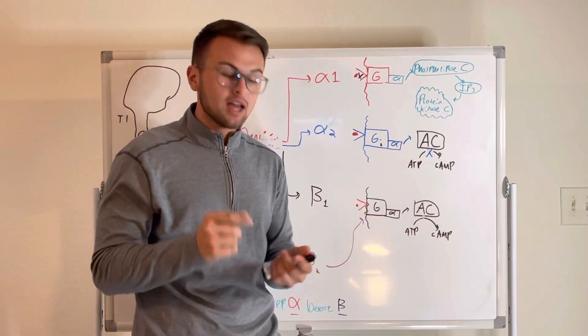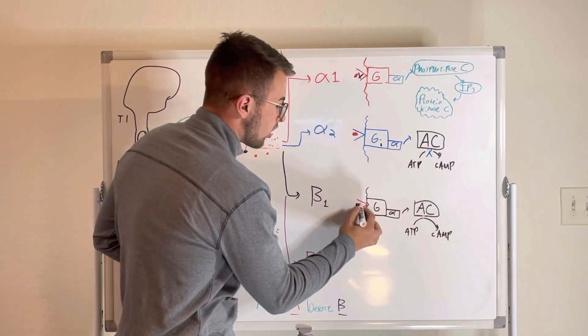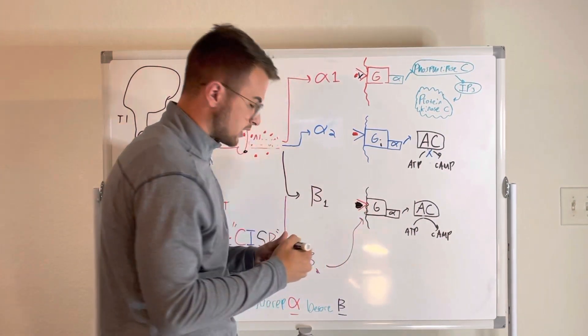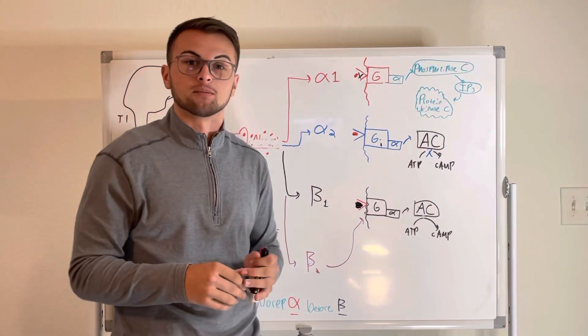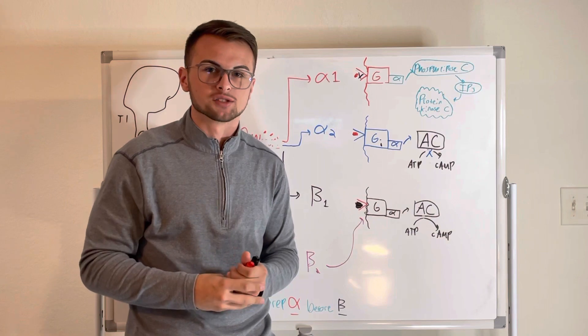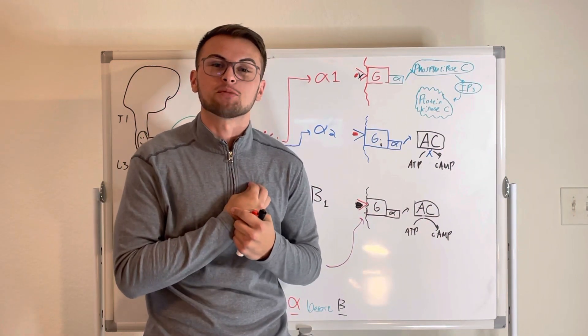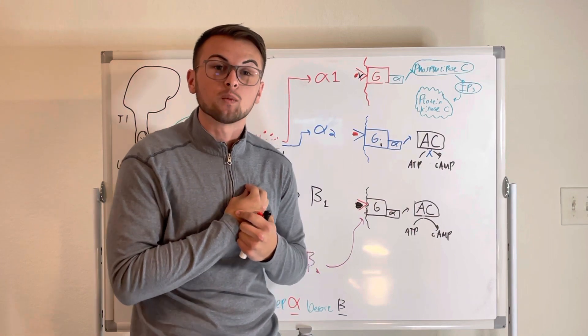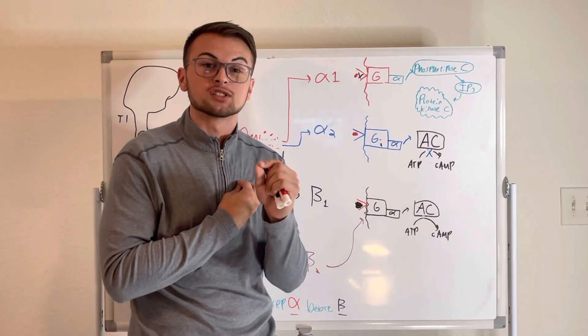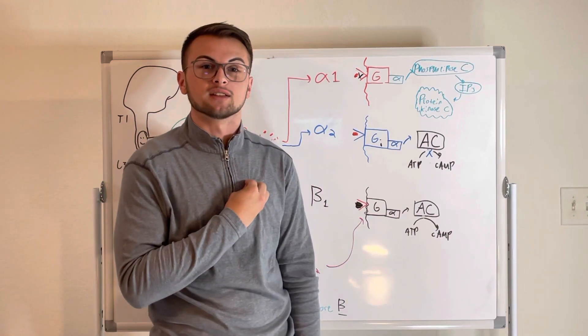So beta-1 receptors can actually be blocked with drugs like atenolol and metoprolol. So let's say that we're blocking our beta-1 receptor. Why are these drugs called cardioselective beta blockers? Well, we know that we have a ton of beta-1 receptors in our heart. So when we block these with drugs like metoprolol and atenolol, which only block beta-1, we say that they are cardioselective.